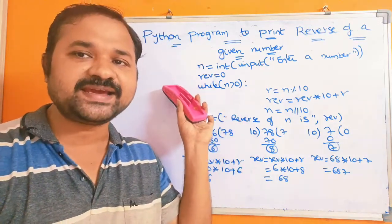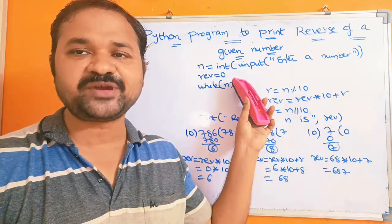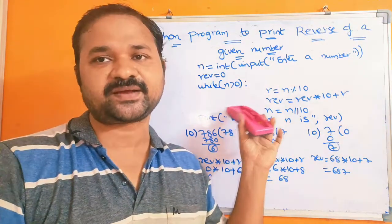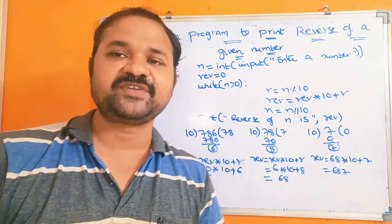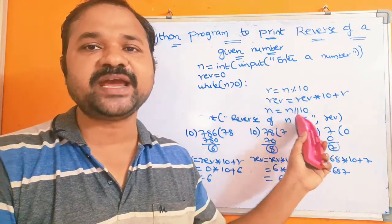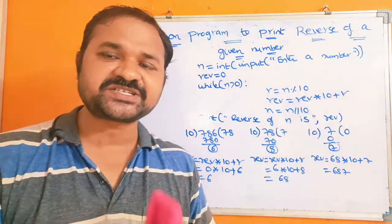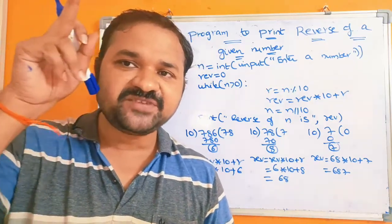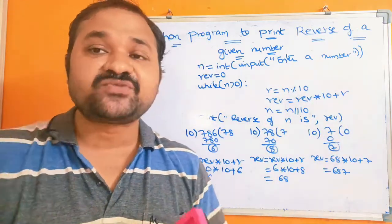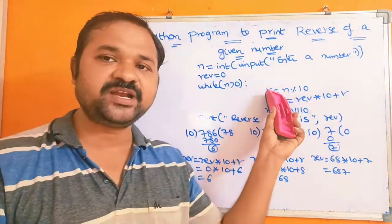Now let us see the logic. While n is greater than 0, we have three statements. First we calculate the remainder: r = n modulo 10. Next, this is the formula for calculating the reverse of a given number: rev = rev * 10 + r. Then, to get the remaining digits, n = n // 10. This is called integer division or floor division — the double slash gives us integer division, whereas a single slash gives a floating point number. We need the integer quotient, so we use double slash. When the condition becomes false, the reversed number is available in rev and we display it.